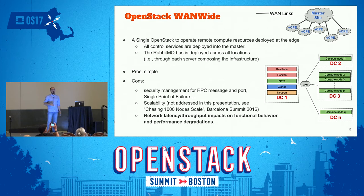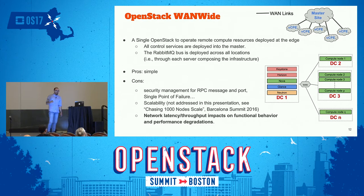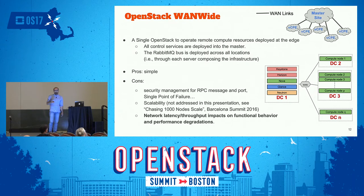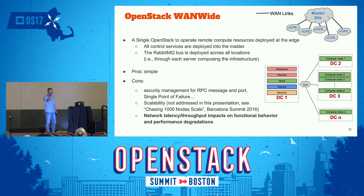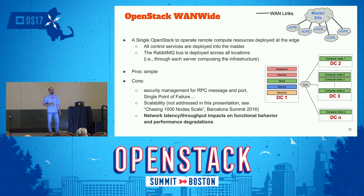The pro of this scenario is that it's simple. The cons include security management for RPC messages, performance issues, and a single point of failure. But the objective of this talk is to address performance analysis under two angles: scalability — we had a presentation at the Barcelona summit with folks from Mirantis — and network latency and throughput impact on the functional behavior of OpenStack. Everything is deployed in the first data center: Neutron, Keystone, Nova, Glance — and remotely, only compute nodes.